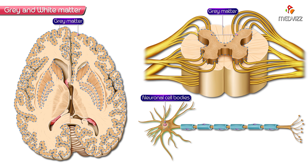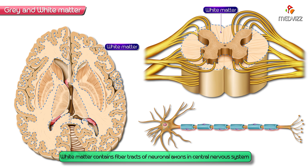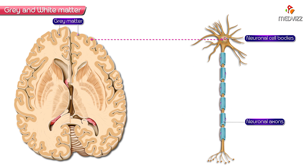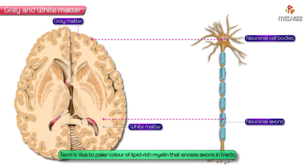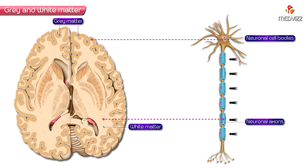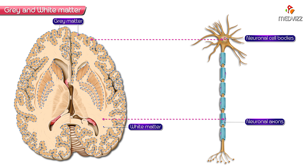Since the gray matter contains the neuronal cell bodies, the white matter is the substance of the brain and spinal cord that contains the fiber tracts of the neuronal axons. The cell bodies are part of the gray matter, and the axons are part of the white matter. The term 'white matter' is used because of the paler color of the lipid-rich myelin that encases the axons in the tracts compared to gray matter.